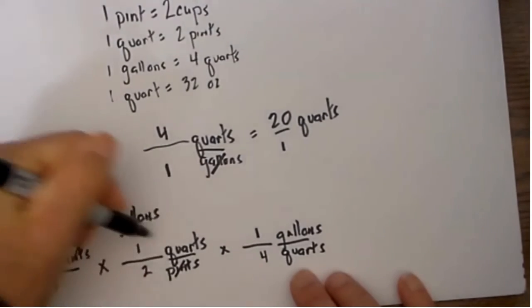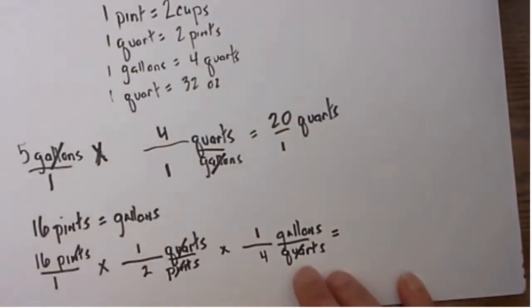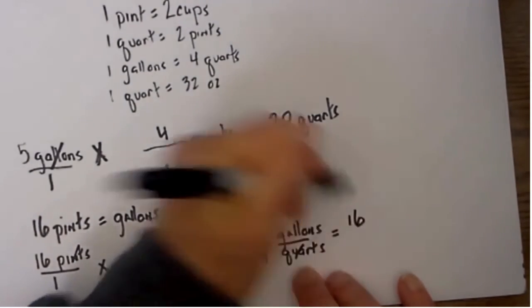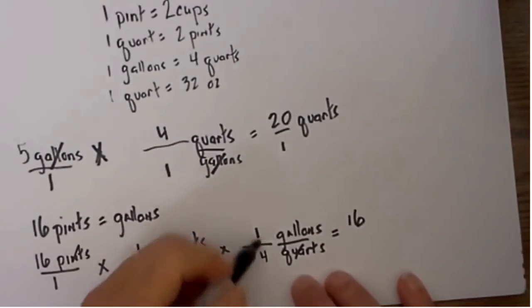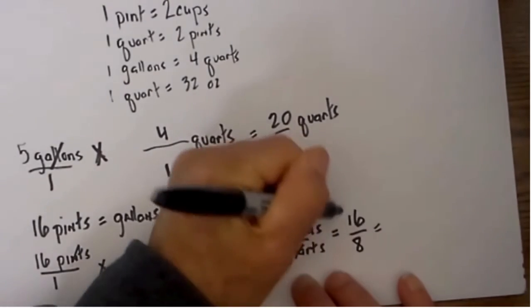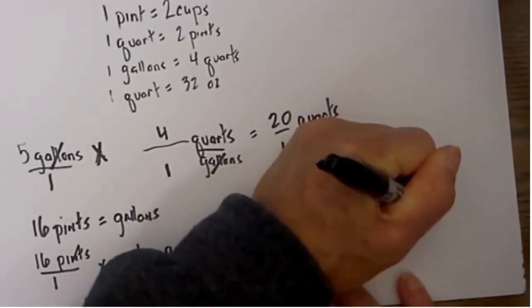Pints will cancel. I am left with gallons. I then multiply 16 times 1 times 1 is 16, 1 times 2 times 4 is 8. Divide 16 by 8, so it will equal 2 gallons.